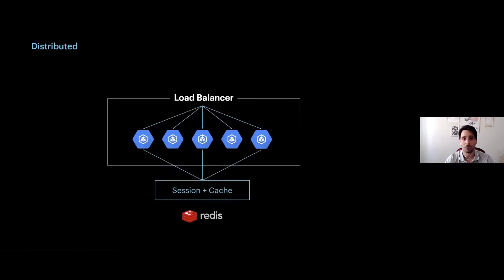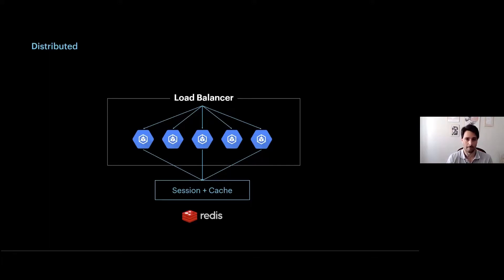Thinking about cloud applications, inevitably we need to consider that applications will be executed in a distributed way with several nodes and many instances simultaneously. In GeneXus 17, we focused on solving load balancing by working on having our cache and session layers in a distributed way, which allows us to work in the best possible way in distributed environments such as those that happen in the cloud.